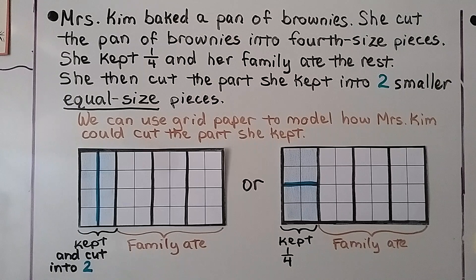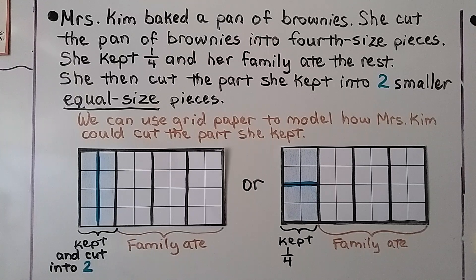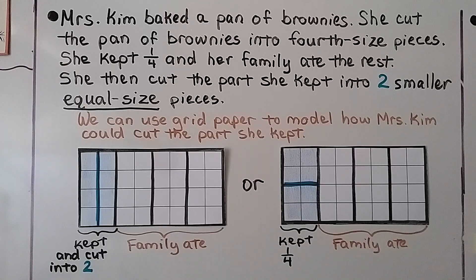Mrs. Kim baked a pan of brownies. She cut the pan of brownies into fourth-sized pieces. She kept one-fourth and her family ate the rest. Then she cut the part she kept into two smaller, equal-sized pieces. We can use grid paper to model how Mrs. Kim could cut the part she kept.